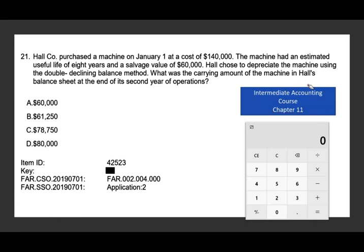Let's get started. I'm going to try to read all the questions so people who are listening can follow along as well. This question is application, meaning you might have to take some concepts and apply them. Holt purchased a machine on January 1st at a cost of $140,000. The machine had an estimated useful life of eight years and a salvage value of $60,000. Holt chooses to depreciate the asset using the double declining balance method. What is the carrying amount of the machine on Holt's balance sheet at the end of the second year of operation?